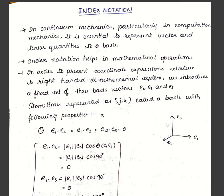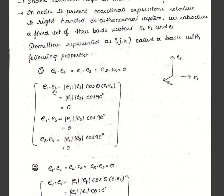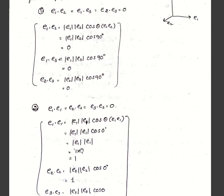The basis vectors e1, e2, e3 are sometimes represented as i, j, k. These basis vectors have specific dot product properties. The dot products e1·e2, e1·e3, and e2·e3 are all equal to zero. This is because the dot product of two vectors equals the product of their magnitudes and the cosine of the angle between them. Since these vectors are orthonormal — mutually perpendicular — the angle between them is 90 degrees, and cos(90°) = 0.